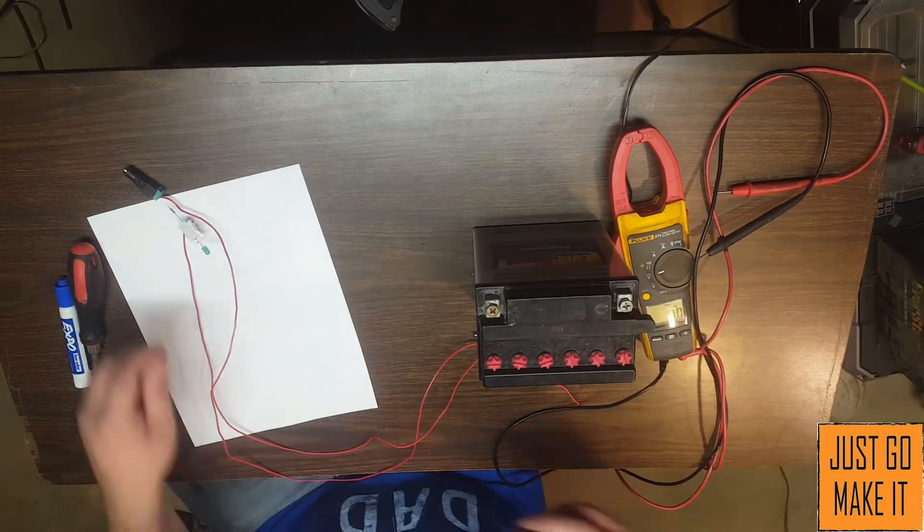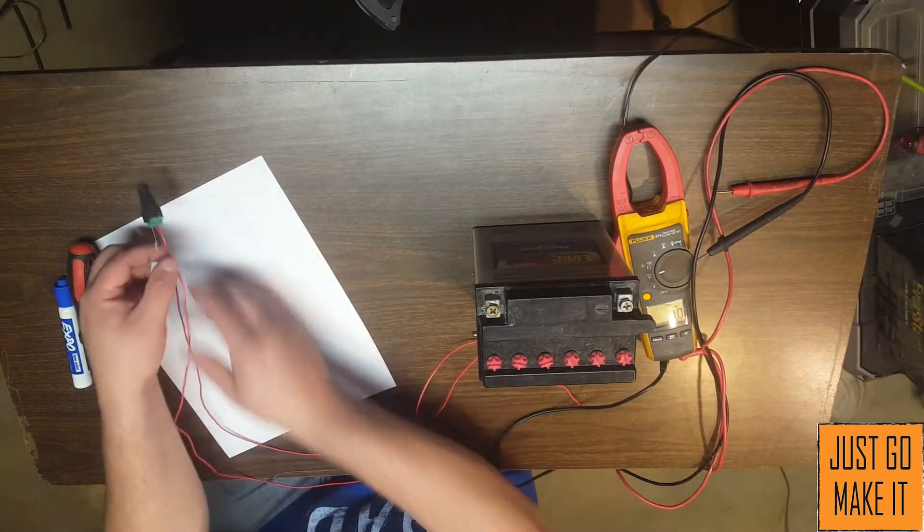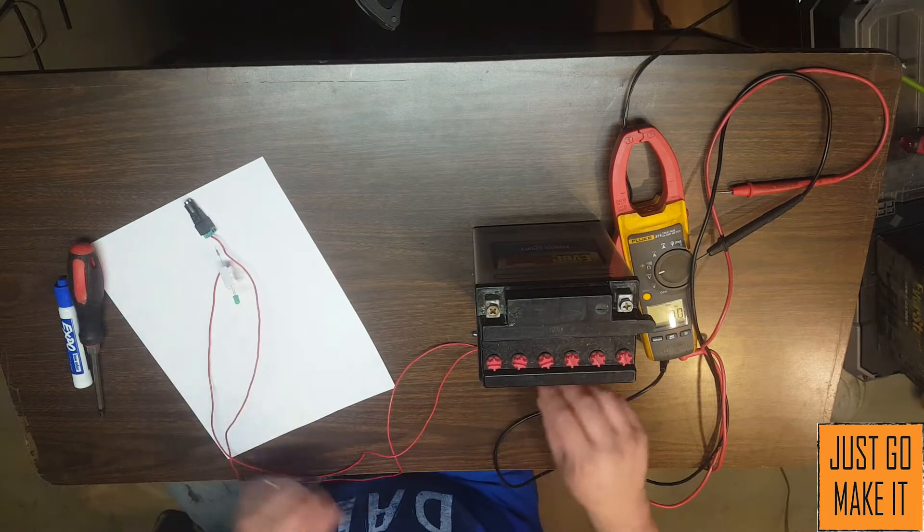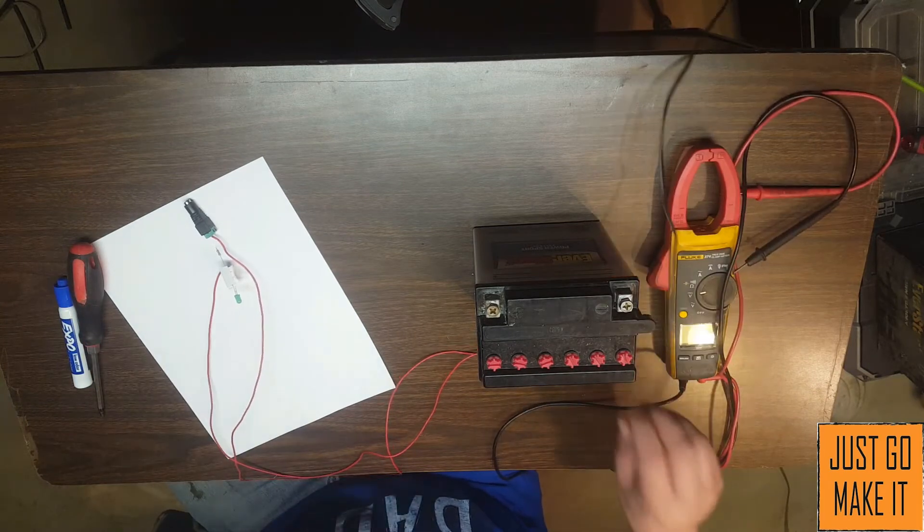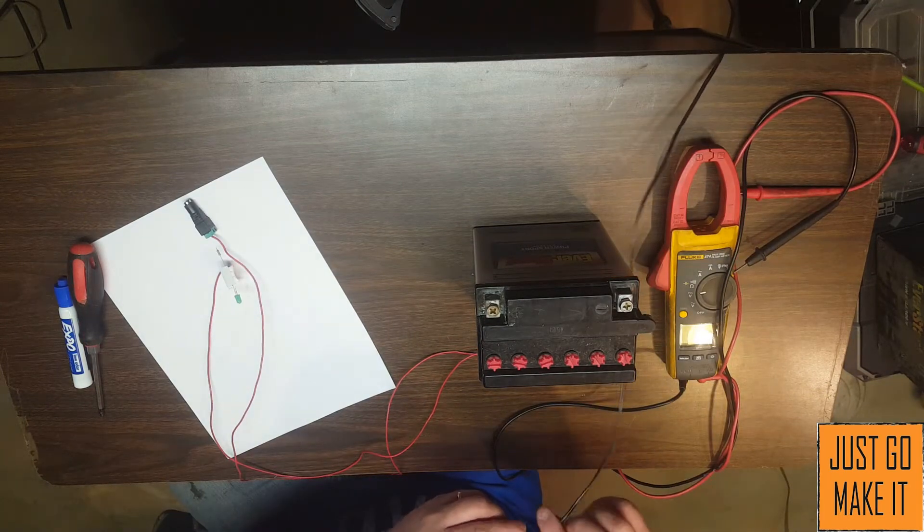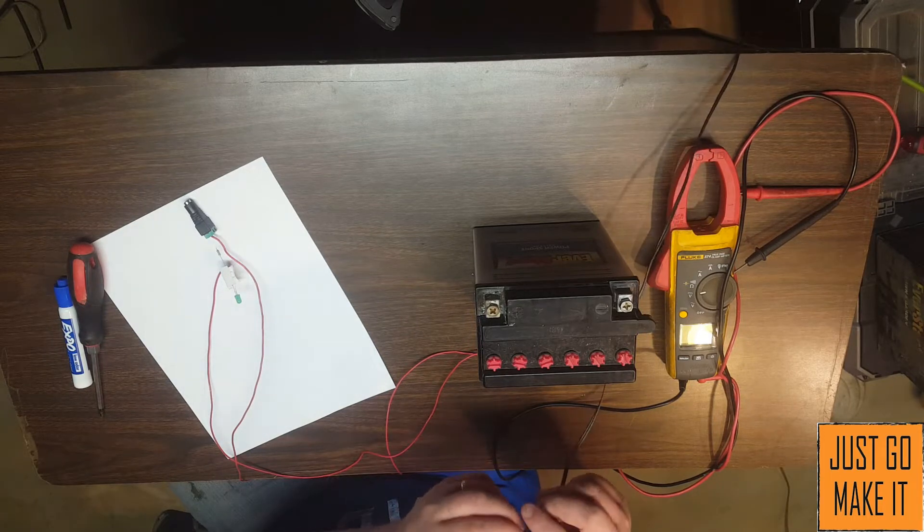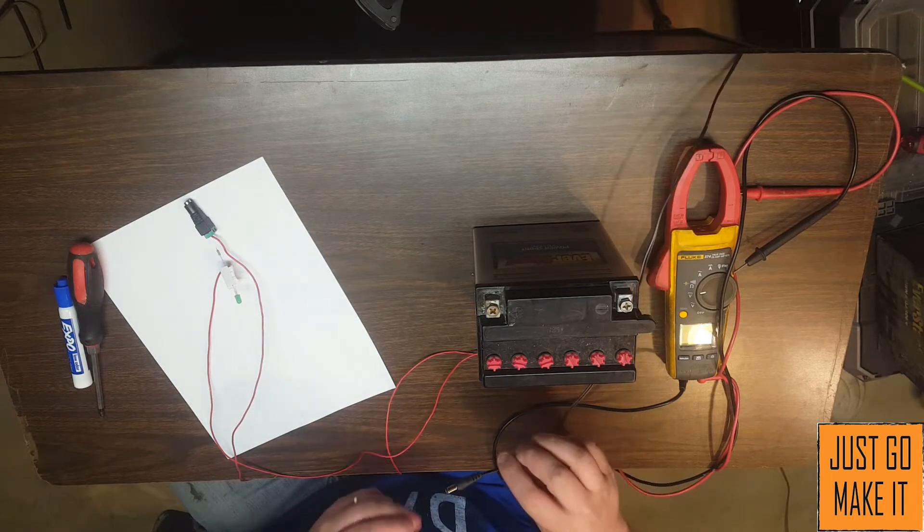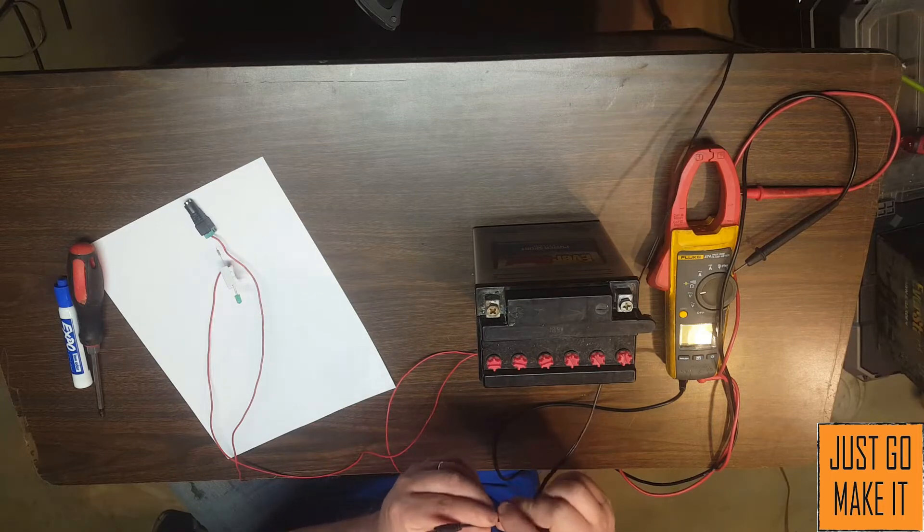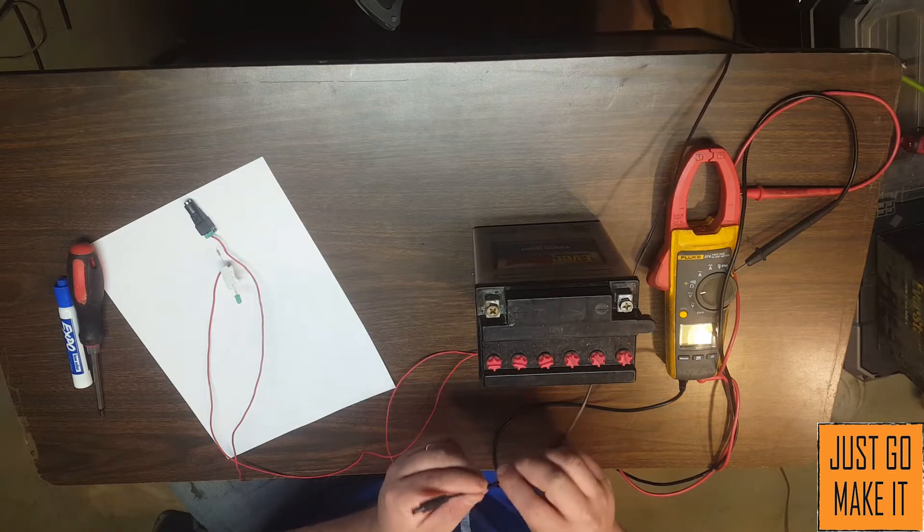So keeping that in mind, my battery charger maintainer idea involves a regular old wall wart. I think I have one from an old wireless router, rated at 12 volts at one amp.